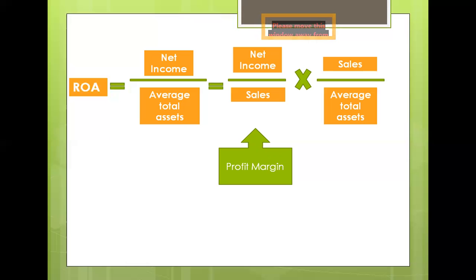Manufacturing overhead refers to all production expenses — for example, utilities, depreciation, and administrative costs other than labor and materials. Administrative overhead refers to all expenses not in cost of goods sold — for example, administrative salaries and benefits, research and development, marketing, legal, and accounting.